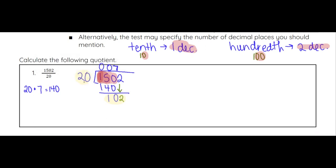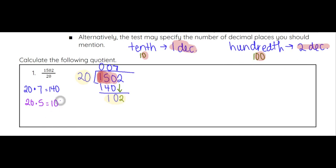Now we're looking at 102 divided by 20. Counting by 20s: 20, 40, 60, 80, 100 — going any further would give 120, which is past 102. So 20 times 5 gets us as close to 102 as we can, at 100. Five times 20 is 100, so 5 is the next number. Subtract 102 minus 100 and we get 2.